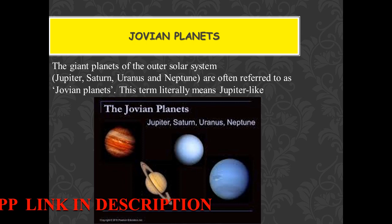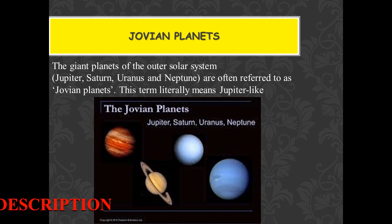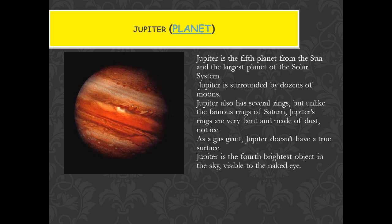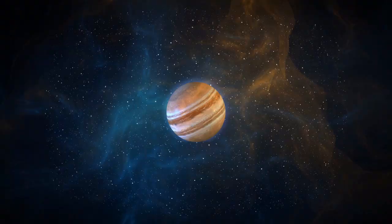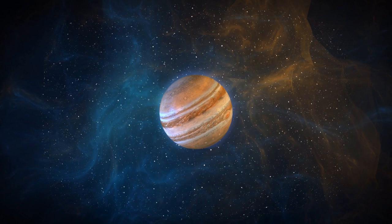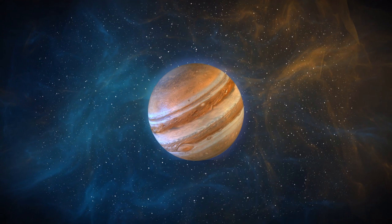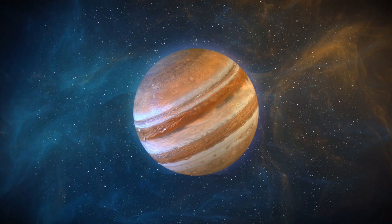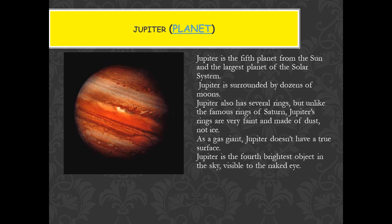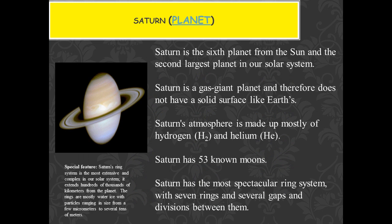After that, the four planets — Jupiter, Saturn, Uranus, and Neptune — are made from gases. We call these gas giant planets. Jupiter is the 5th planet and the largest planet in our solar system. Jupiter has several rings, though Jupiter's rings are faint. Jupiter is the 4th brightest object in the sky, and it has several moons.